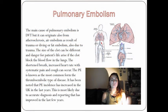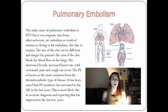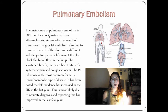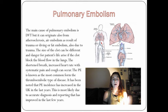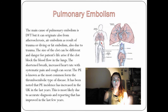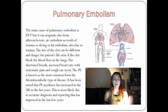Pulmonary embolism: The main cause of pulmonary embolism is a clot, but it can also originate from atherosclerosis, air embolism, and fat embolism. The size of the clot can vary, and danger for the patient's life arises if the clots block the blood flow in the lungs. Symptoms include shortened breath, increased heart rate with chest pain, and cough. PE is the most common thromboembolic type of disease, and its incidence has increased in the UK in recent years, most likely due to improved diagnosis and reporting.